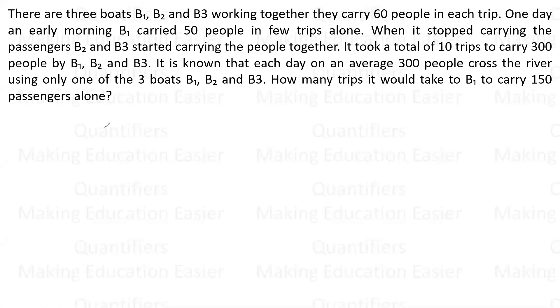There are three boats B1, B2, and B3. Together they can carry 60 people in each trip. One day an early morning, B1 carried 50 people in few trips alone. When it stopped carrying the passengers, B2 and B3 started carrying the people together.